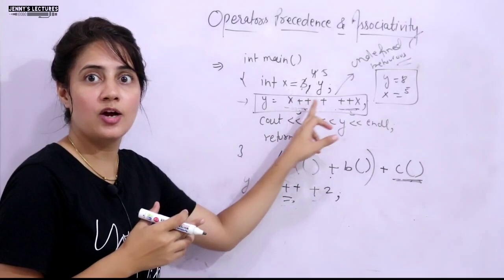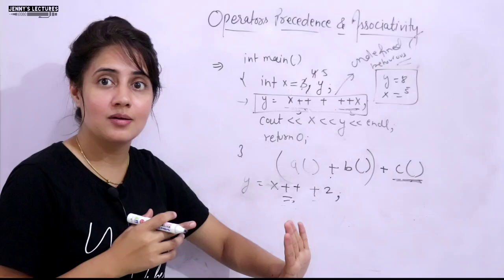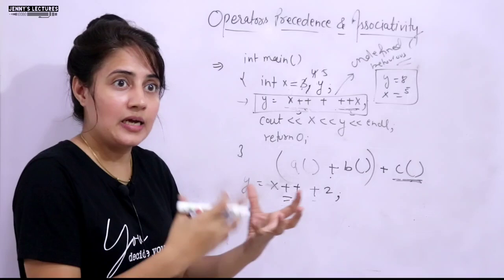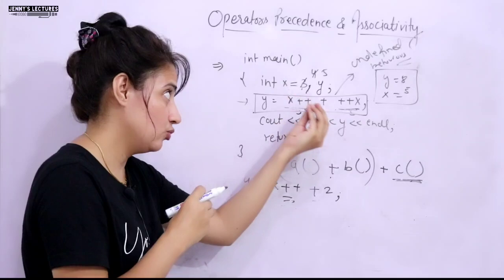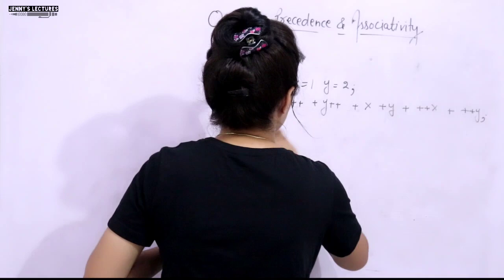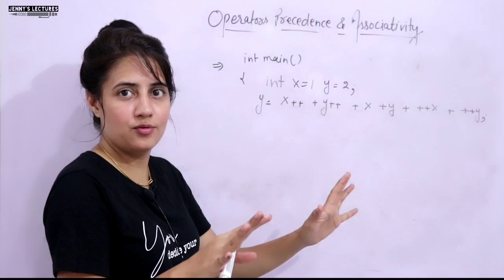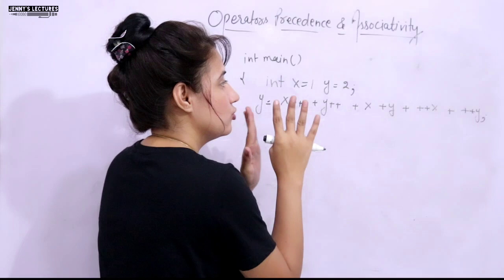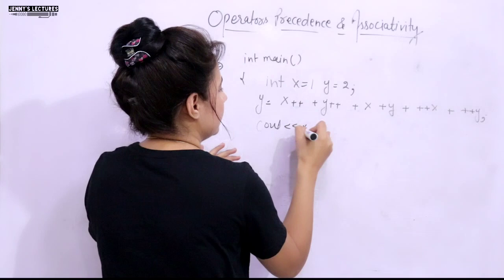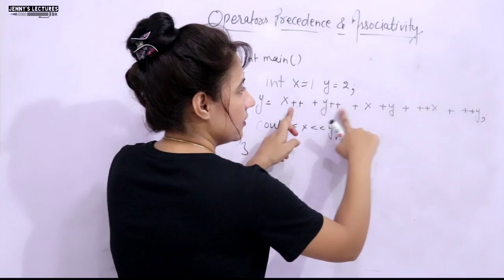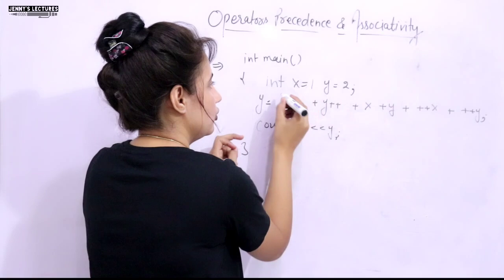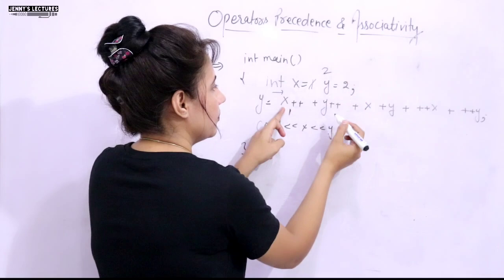Technically, if someone asks you a question with multiple ++ or -- operators in one expression, the correct answer is: it will show undefined behavior — there is no definitive answer. But if you want to apply precedence and associativity at compile time to evaluate it anyway, let's take another example: z = (x++) + (y++) + (++x) + (++y). This would also show undefined behavior at runtime.